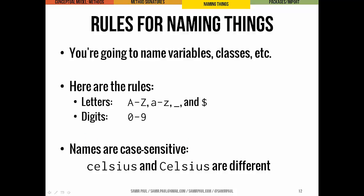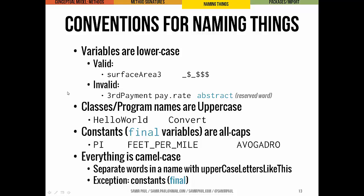Next, let's talk about naming things. Generally Java is pretty tolerant of how things are named, but there are strong style conventions to be mindful of. Valid characters include capital letters, lowercase letters, dollar sign, and digits — but names in Java are case sensitive, so 'celsius' and 'Celsius' are different. By convention, variables are named in lowercase and don't start with numbers. We don't use reserved words in names. Classes and program names start with uppercase letters — like HelloWorld or Convert. Constants are the only things in all capital letters — like PI, FEET_PER_MILE, AVOGADRO. Everything else is in camel case, where every word in a variable name starts with an uppercase letter.